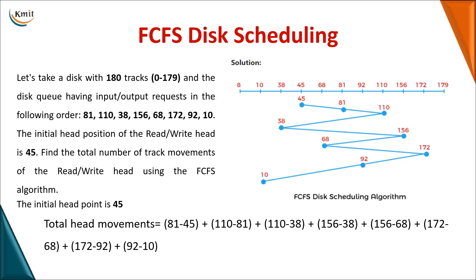Moving on to the first algorithm — as the name implies, it is First Come First Serve (FCFS). In FCFS, depending upon the order requests arrive, you perform the service of that request. The disk is a platter divided into tracks, and each track is divided into sectors where data is stored. Here we have a disk with 180 tracks numbered from 0 to 179, and the track numbers are represented randomly based on the requests.